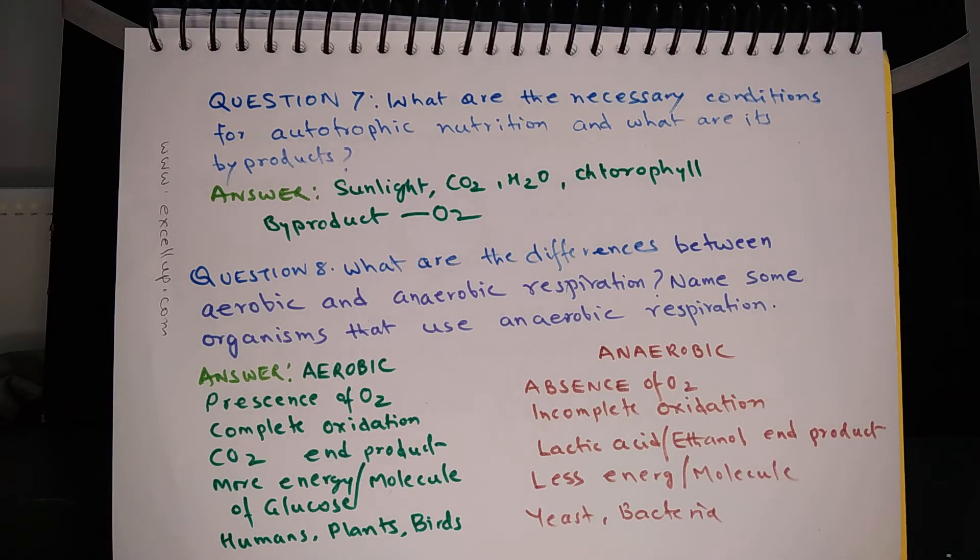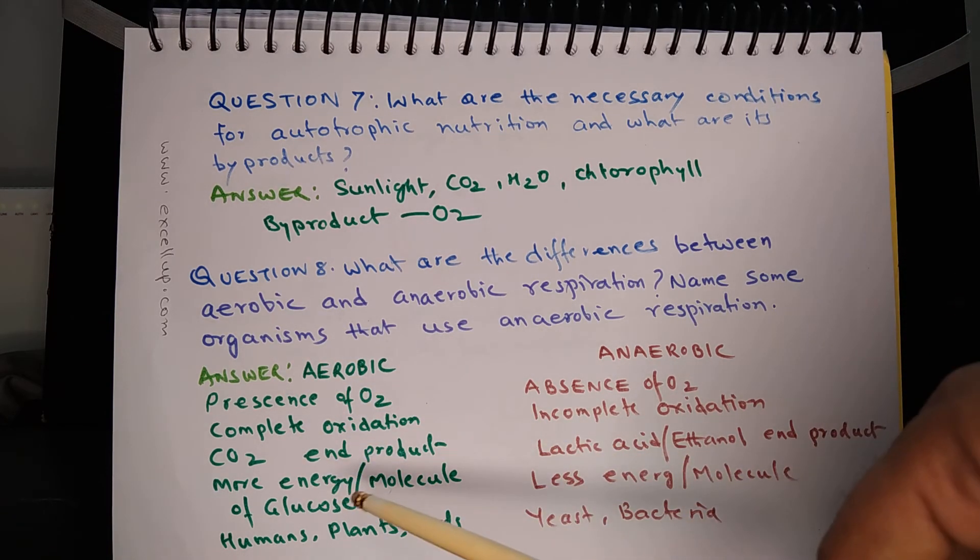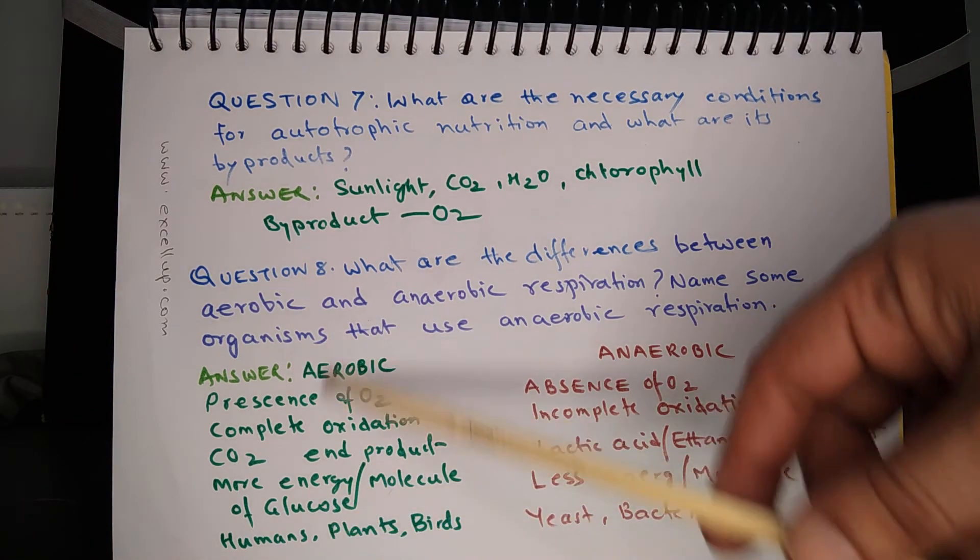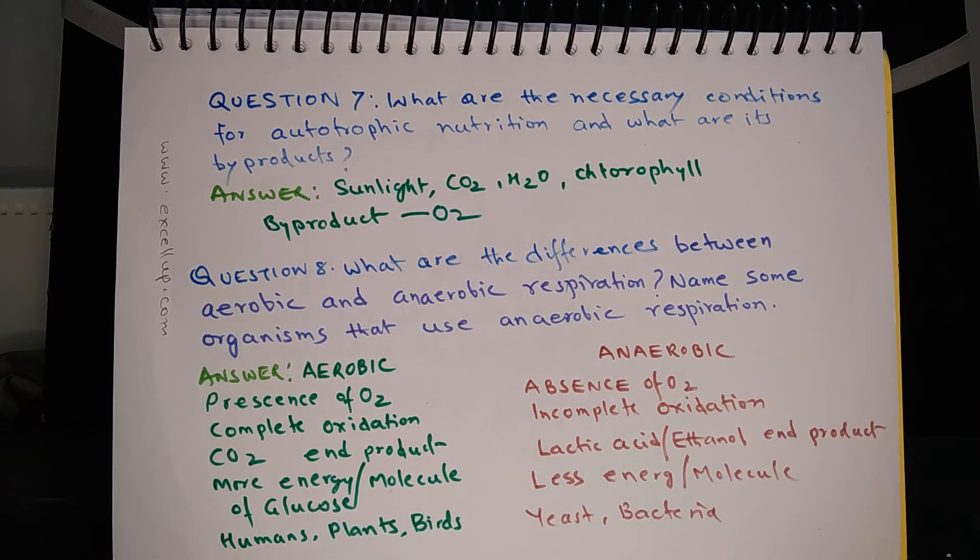Carbon dioxide is the end product in aerobic respiration. In anaerobic respiration, apart from carbon dioxide, lactic acid or ethanol are also produced. Aerobic respiration is more efficient because of complete utilization, so more energy is produced per molecule of glucose, which is not the case in anaerobic respiration. Examples of organisms which use aerobic respiration are humans, plants, birds, reptiles, almost all the complex animals and plants. Anaerobic respiration is used by microbes like yeast and some bacteria.